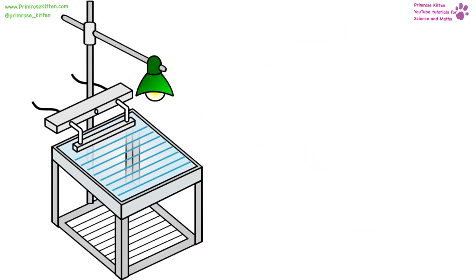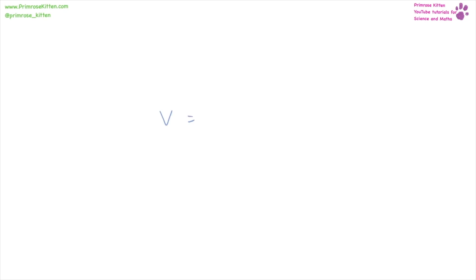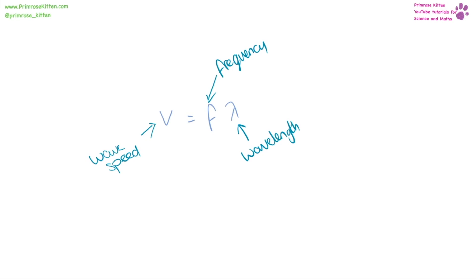If we want to measure the speed of a wave we can use a ripple tank. This will go in and out of the water creating waves. From this we can measure a wavelength, and also by looking at how many waves pass a certain point per second, the frequency. Then we can use our equation to work out the speed of the wave: v equals f times lambda. Wave speed equals frequency times wavelength. Units of speed are in meters per second, frequency in hertz (capital H, lowercase z), and wavelength in meters.